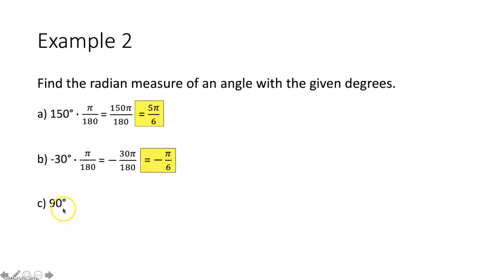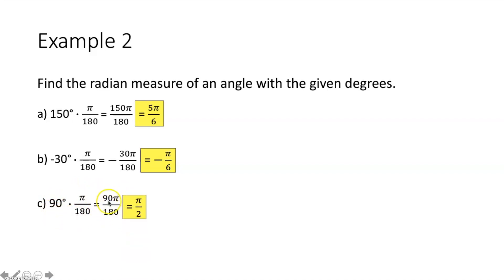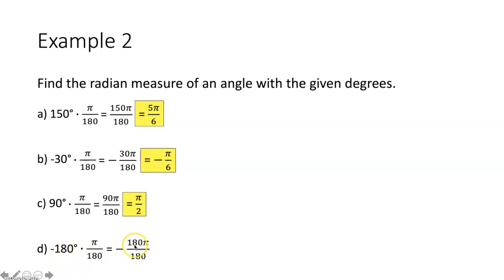Part c, we're converting 90 degrees to radians. We multiply by π over 180. Imagining 90 as over 1, multiply numerators and denominators together. Simplifying: 90 over 180 reduces to 1 over 2, meaning 90 degrees is equivalent to π over 2 radians. Part d, we have negative 180 degrees and want to convert to radians. We multiply by π over 180. Imagining negative 180 as over 1 and multiplying, we simplify 180 over 180 — those cancel — and we end up getting negative π. Therefore, negative 180 degrees is equivalent to negative π radians.